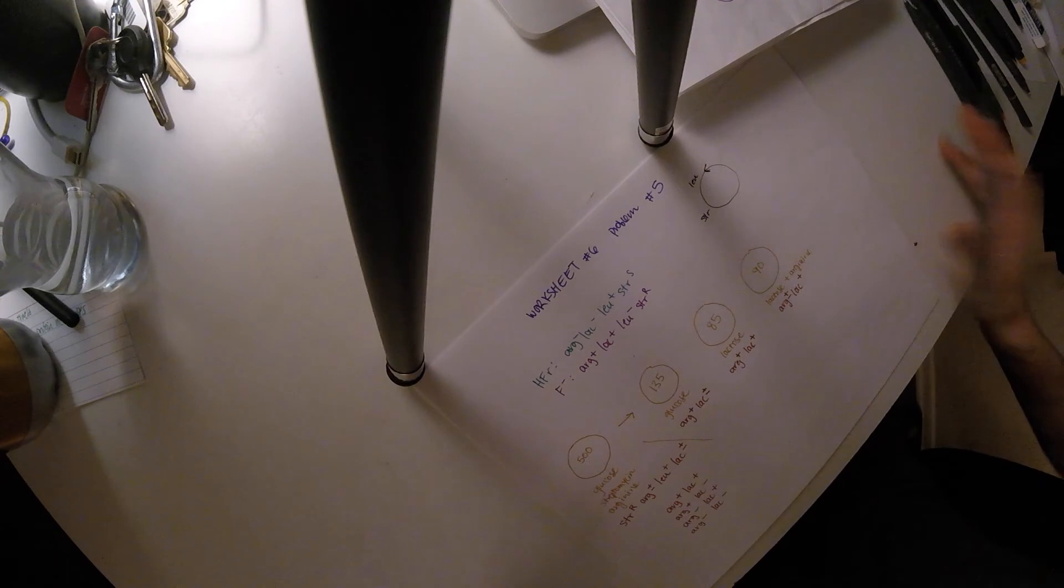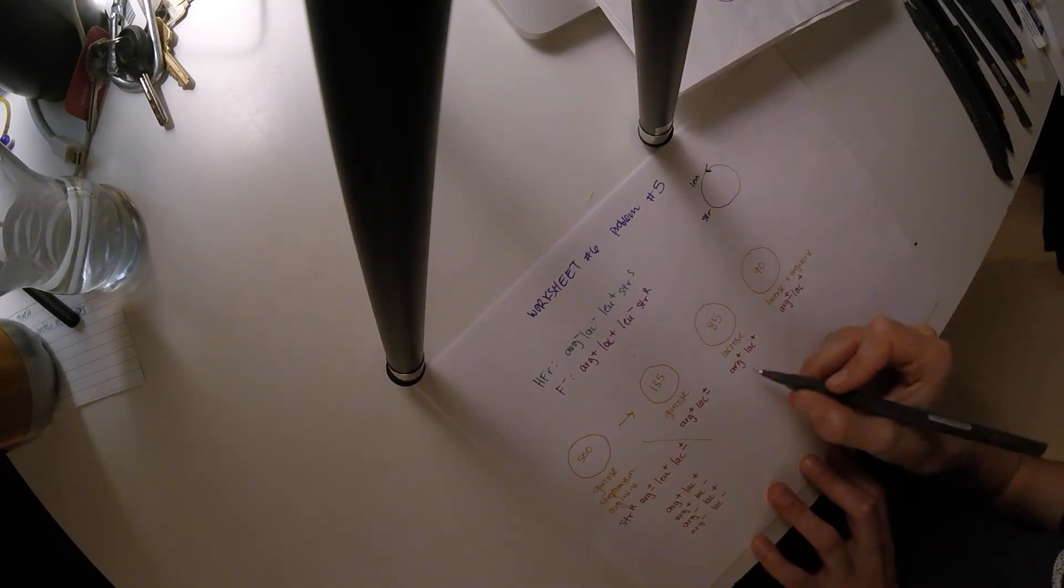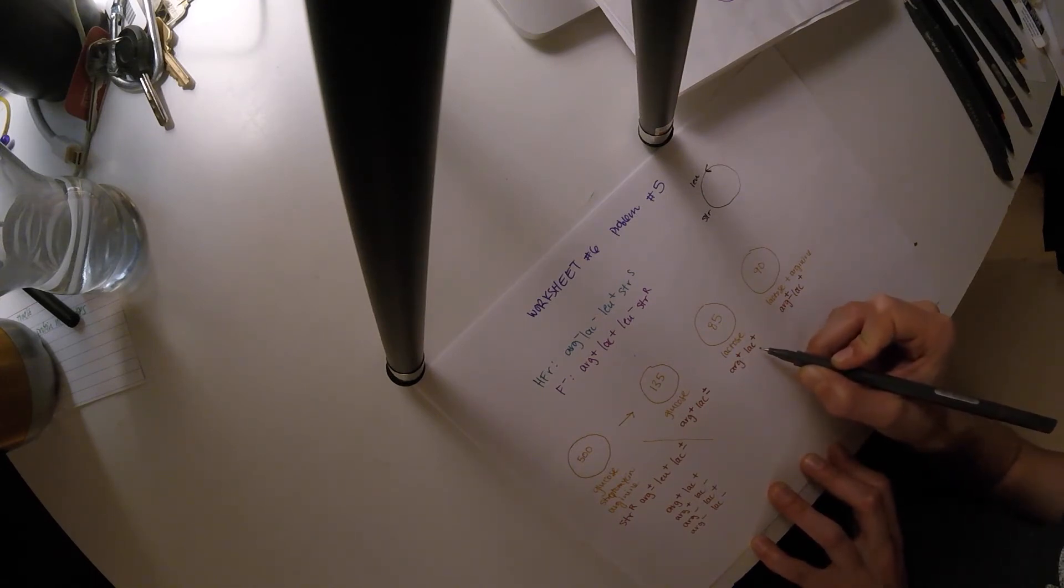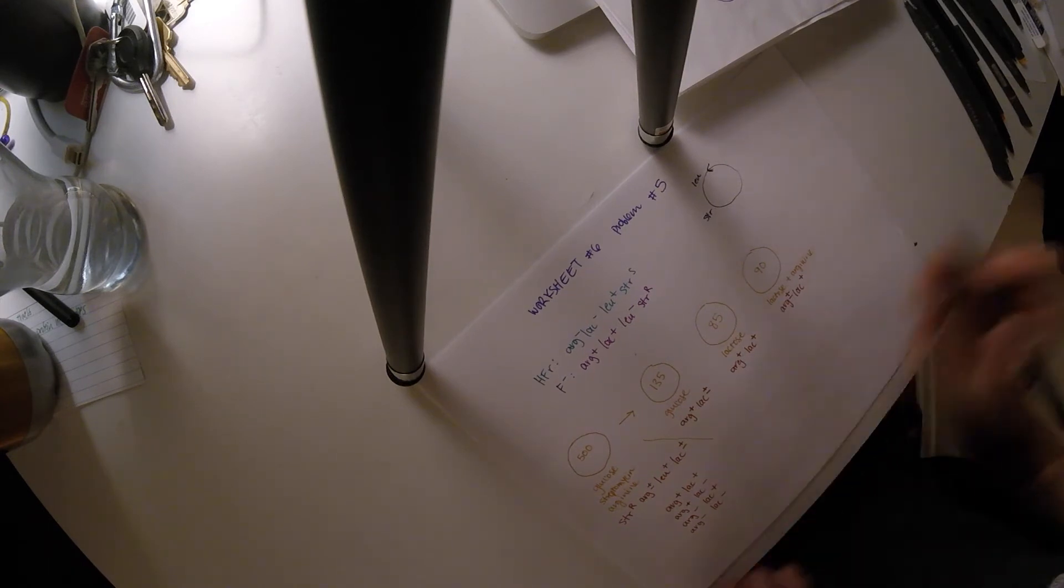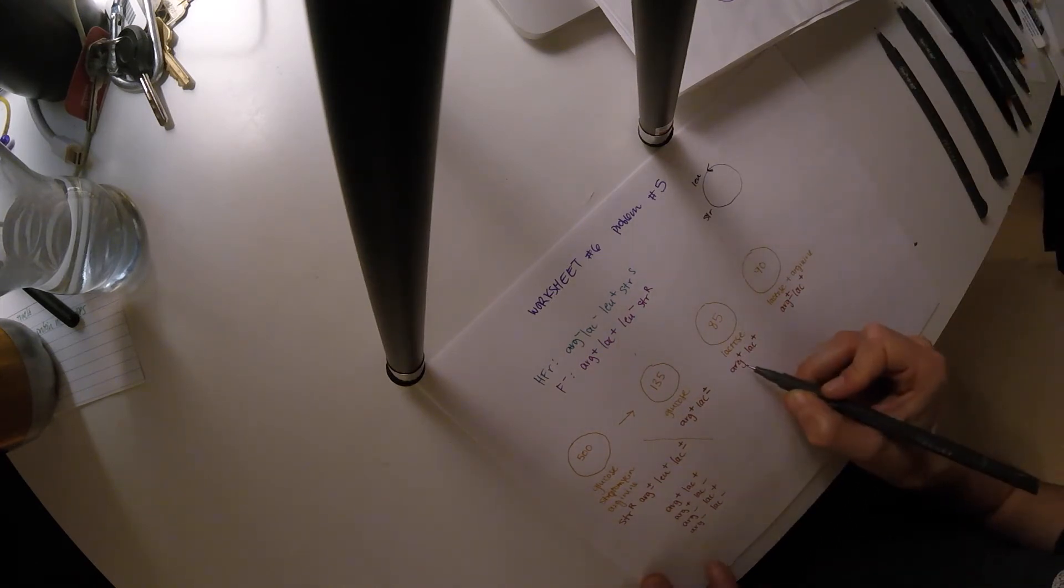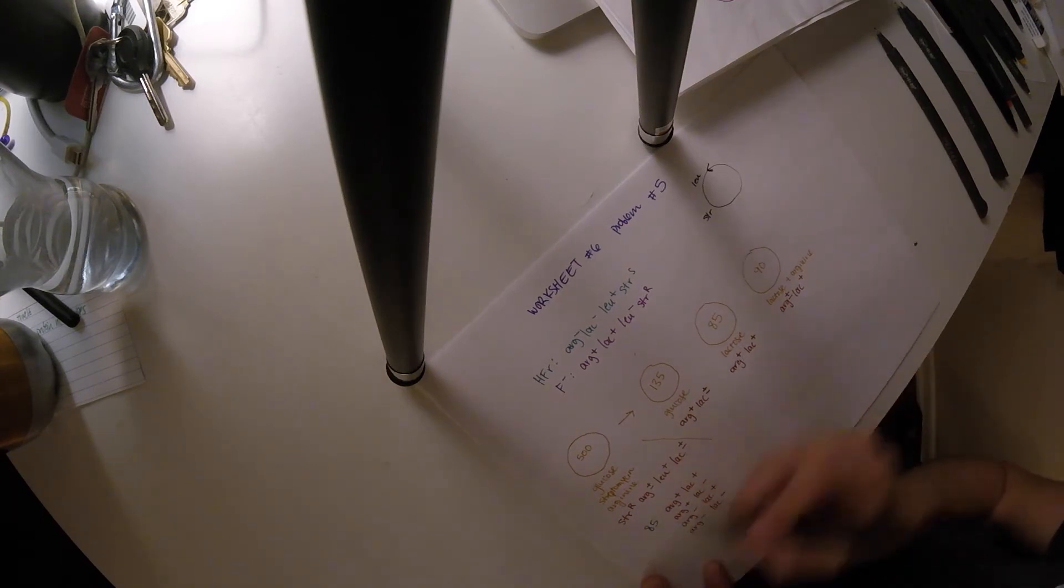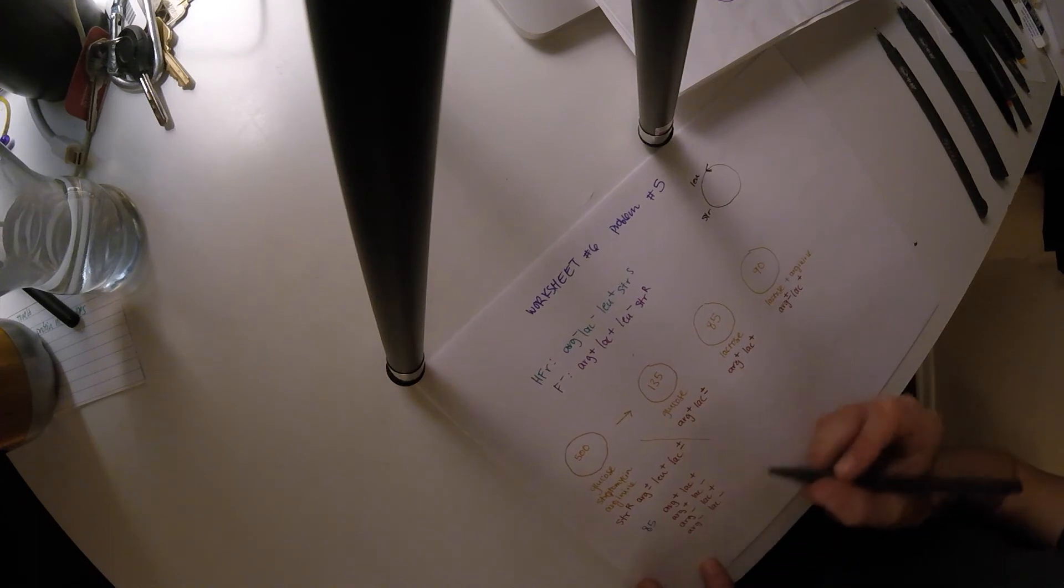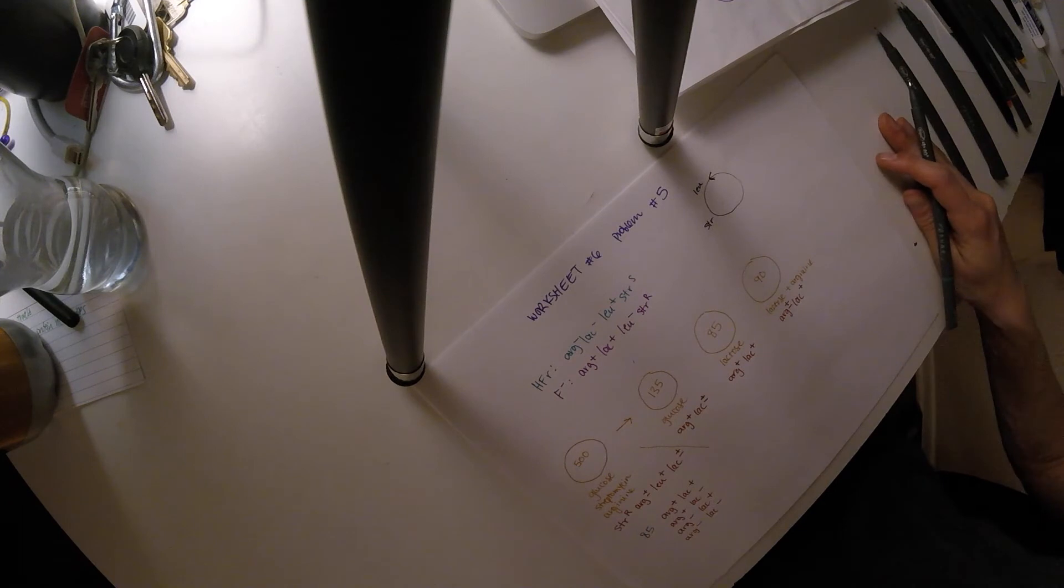So the only one out of these three plates that we have a definite number for is right here, our arg plus, lac plus. Because there's no uncertainty here. There's only the pluses. So that means 85 of our colonies are distinctly arg plus, lac plus. So we're going to put 85 here.